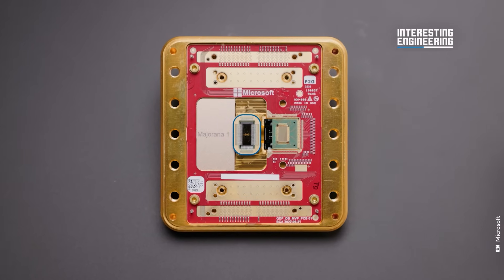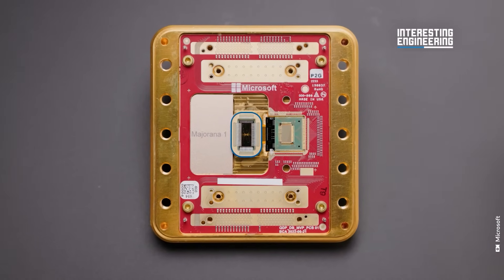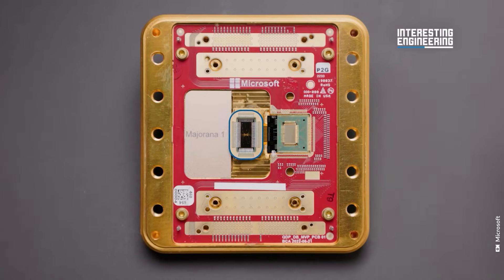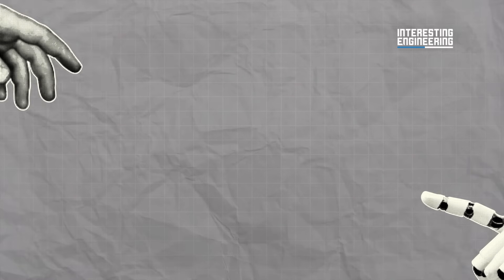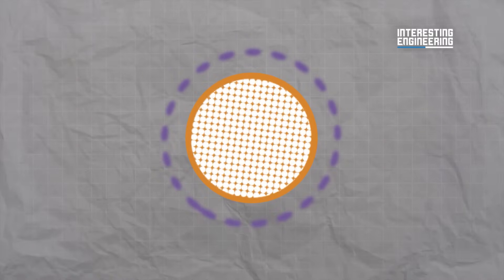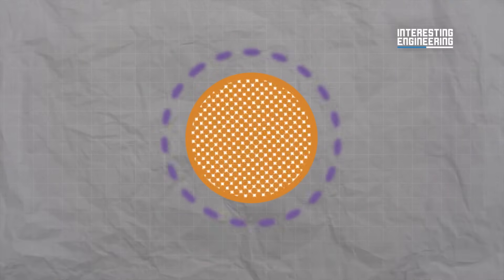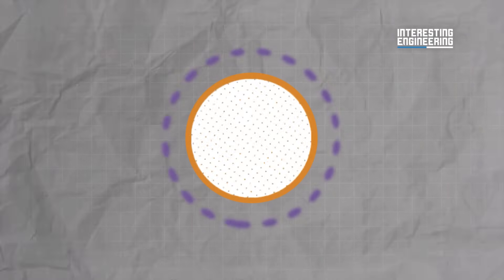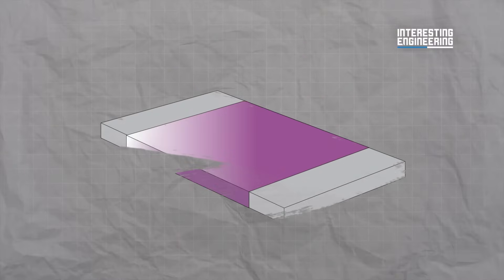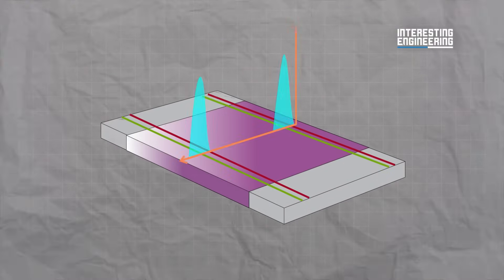A key innovation of Microsoft's approach is a novel way to read qubits using microwaves. This method is so precise that it can detect the difference between 10 million and 10 million and 1 electrons in a superconducting wire, enabling the accurate determination of each qubit's quantum state.